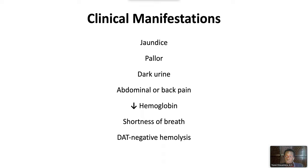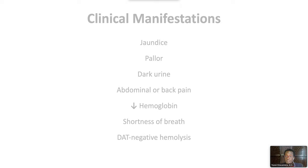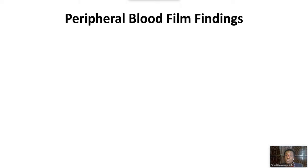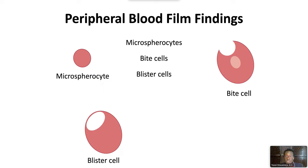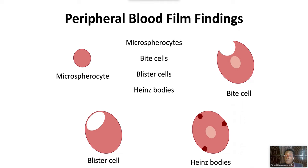Laboratory studies will show a DAT negative hemolytic anemia. Peripheral blood film findings include microspherocytes, bite cells, and blister cells. Special stains can document the production of Heinz bodies, which are collections of denatured globin chains often attached to the RBC membrane.